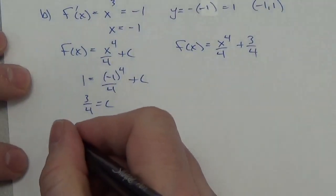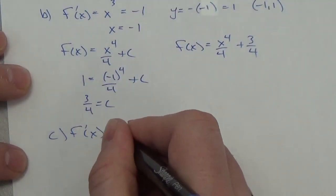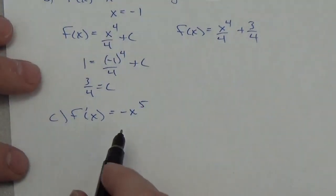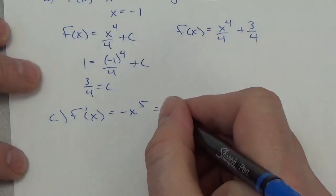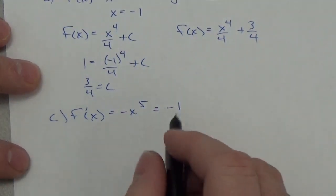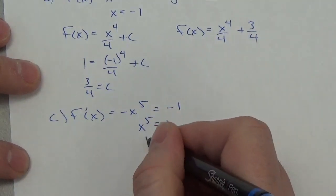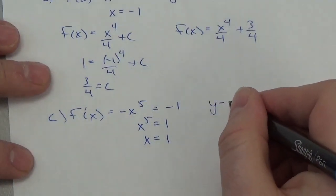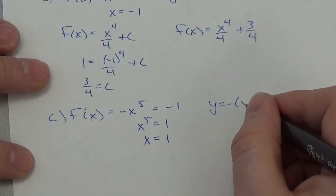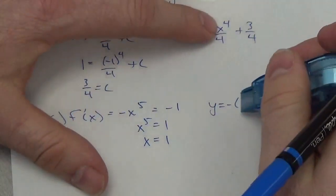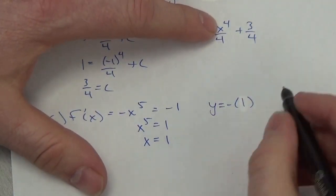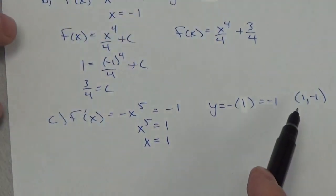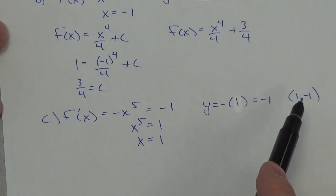Let's look at part c. We're told the derivative is equal to negative x to the fifth. I know the derivative should equal the slope of the tangent, which is negative one. Solving for x, we get that x equals positive one. Plugging into the equation of the tangent, the y-coordinate is negative one. So my boundary condition is the point one, negative one.